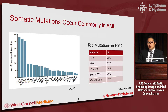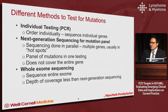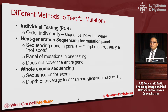There are different methods to test for these mutations. The most common way we used to test mutations was individual mutation testing using PCR — you order individually and do individual PCR for each gene and get an individual gene report. What is more common these days is next-generation sequencing, where you're sequencing in parallel using amplicons and primers from multiple genes, and you're able to sequence them in parallel. That's why you receive a panel of mutations in one test.